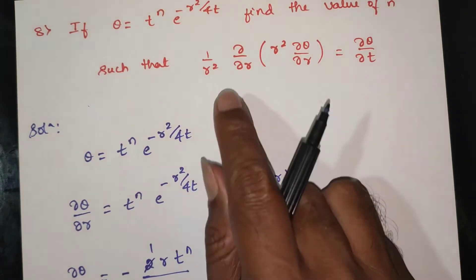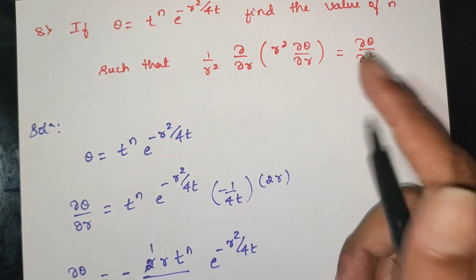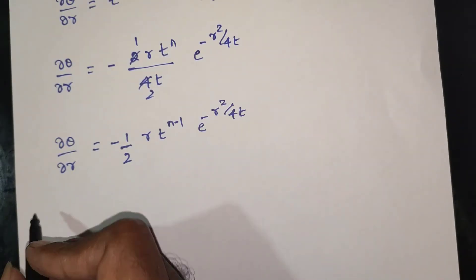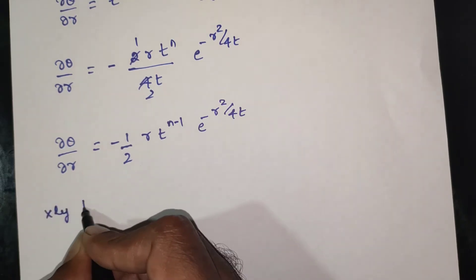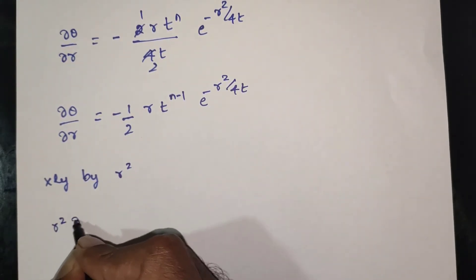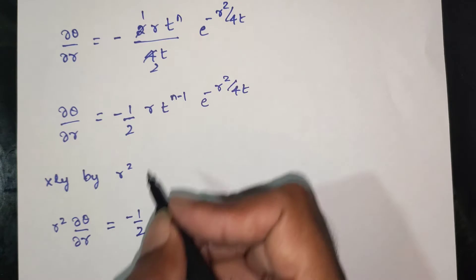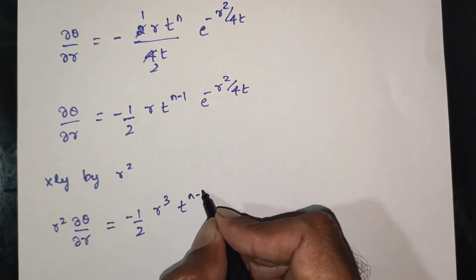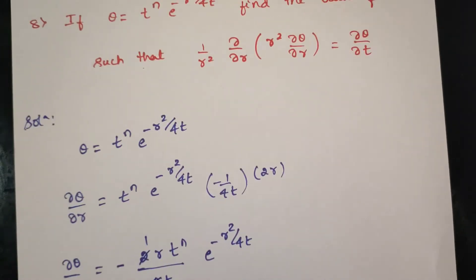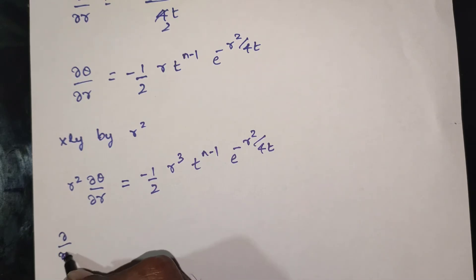Now we find the value of n such that (1/r²) · ∂/∂r(r² · ∂θ/∂r) equals ∂θ/∂t. We compute r² · ∂θ/∂r, which equals r² times (-1/2) · r · t^(n-1) · e^(-r²/4t), giving (-1/2) · r³ · t^(n-1) · e^(-r²/4t).